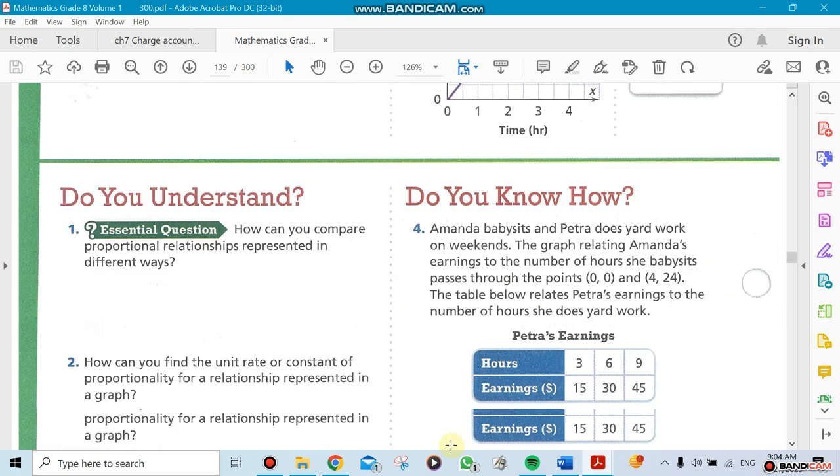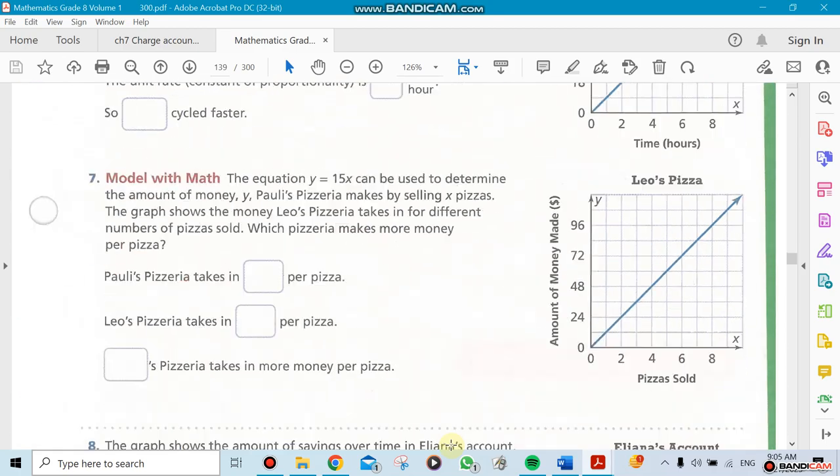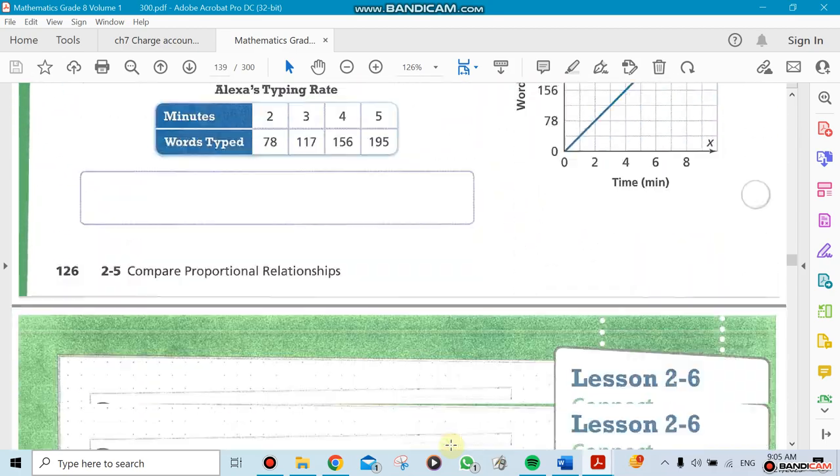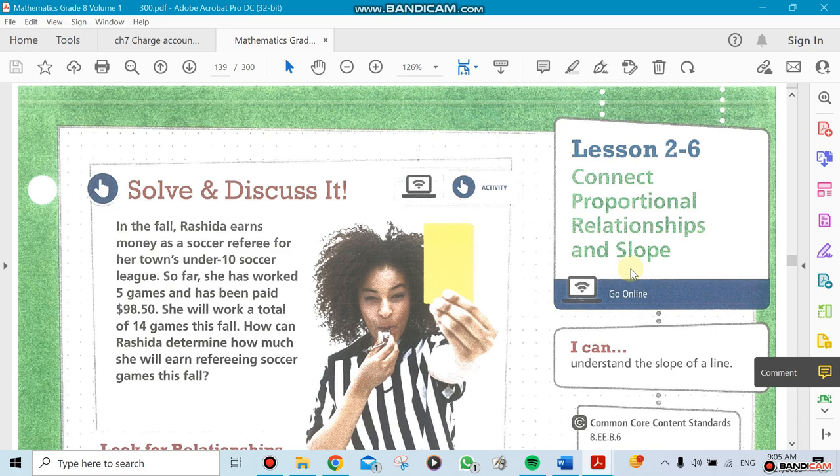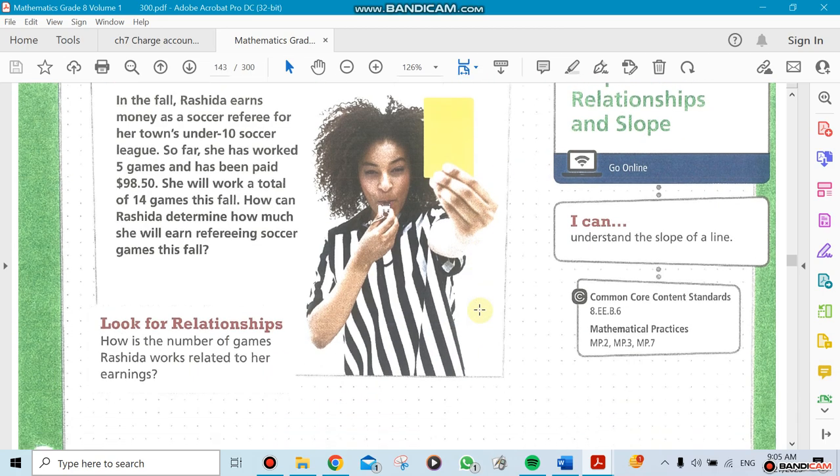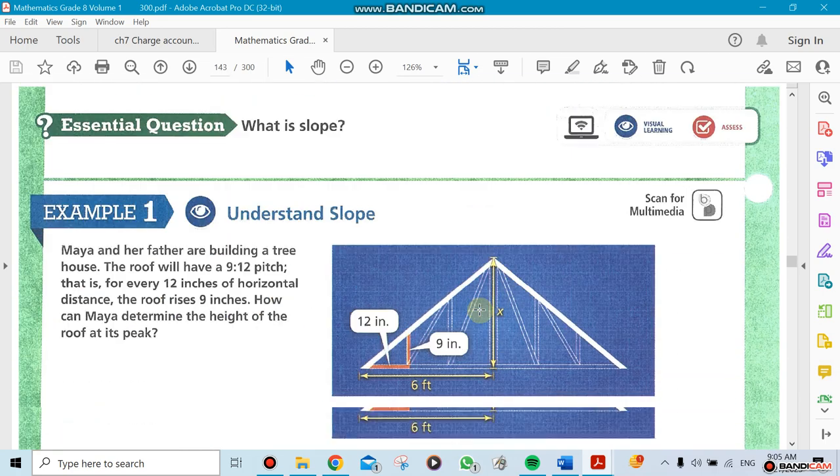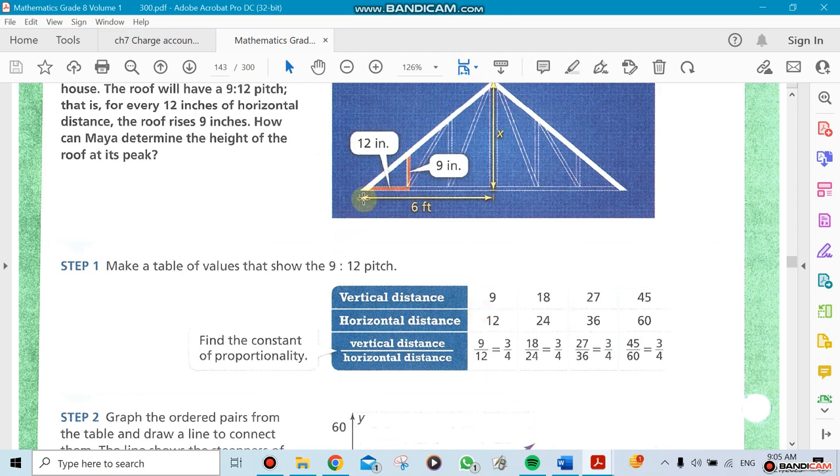The next section is connecting proportional relationships with slope. We're going to take something called slope. Slope is like going up or going down.